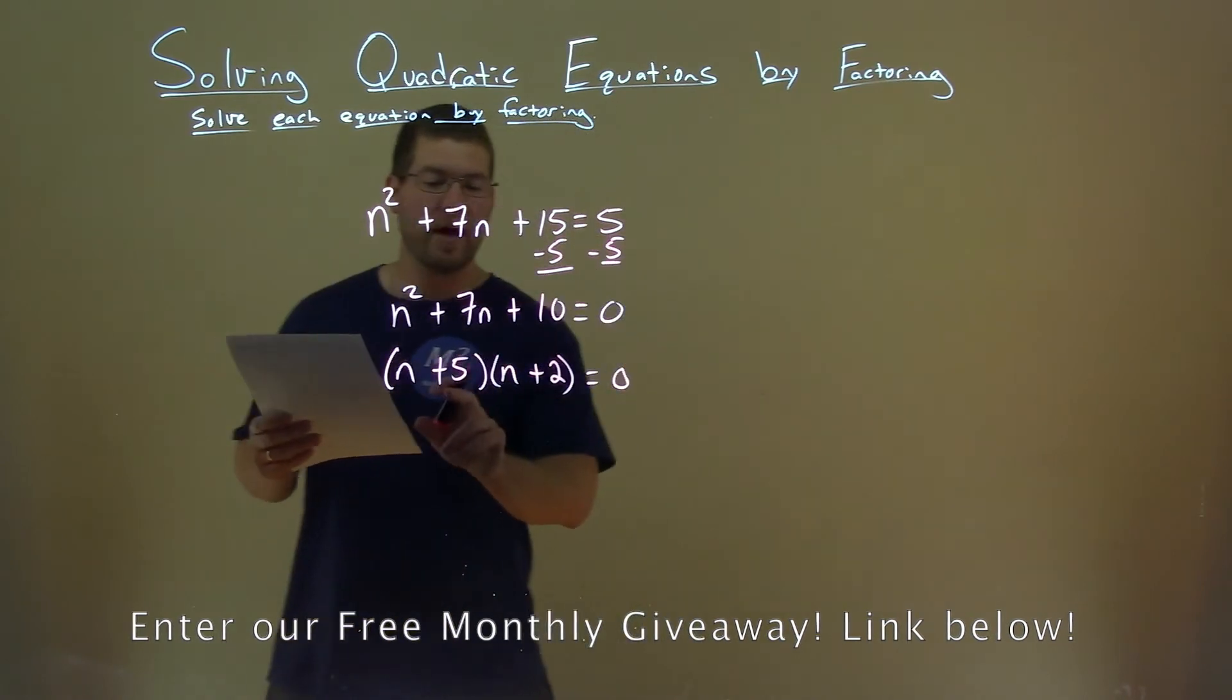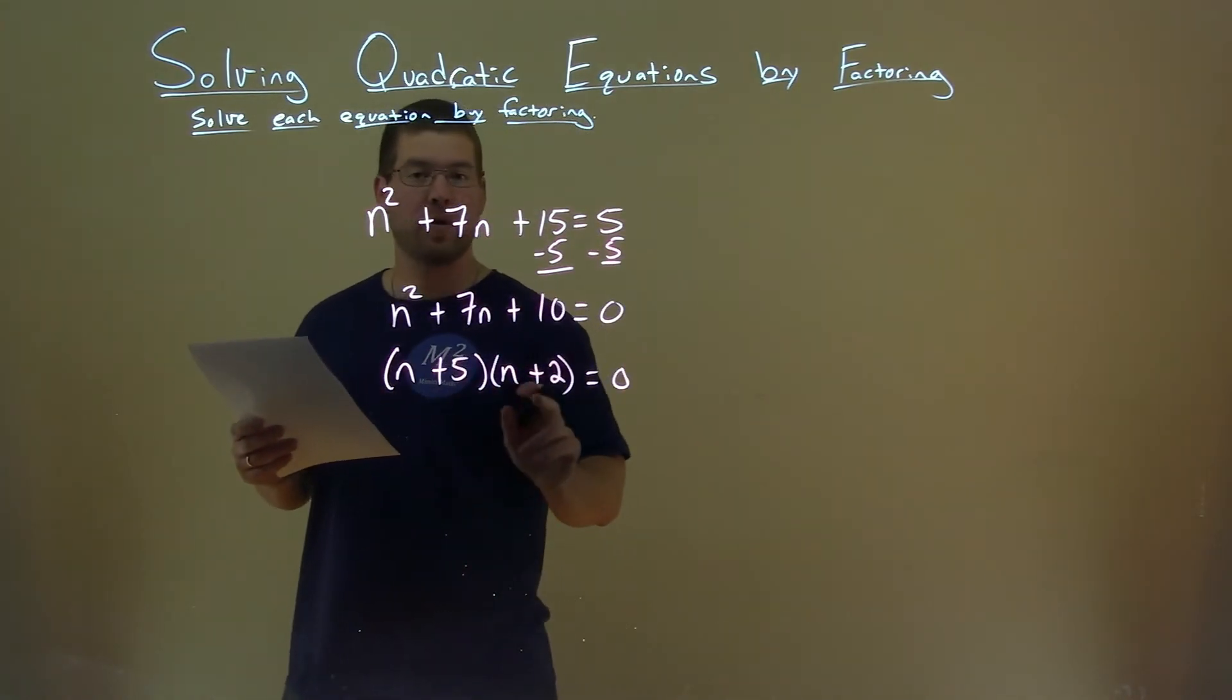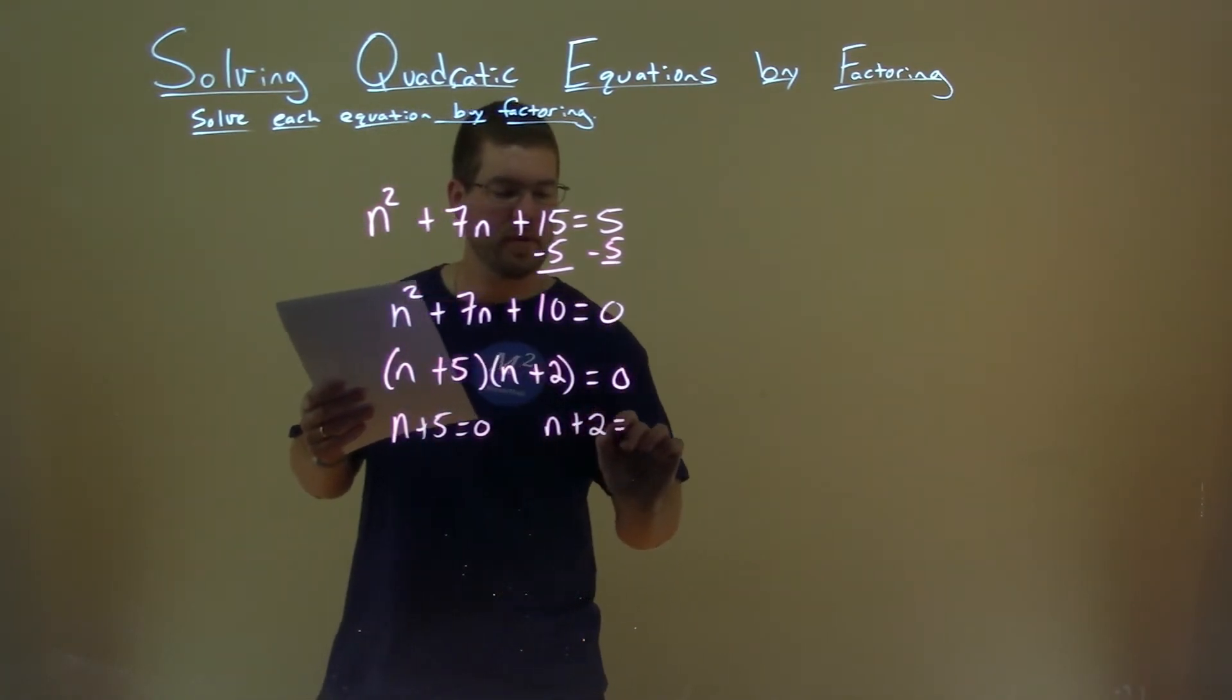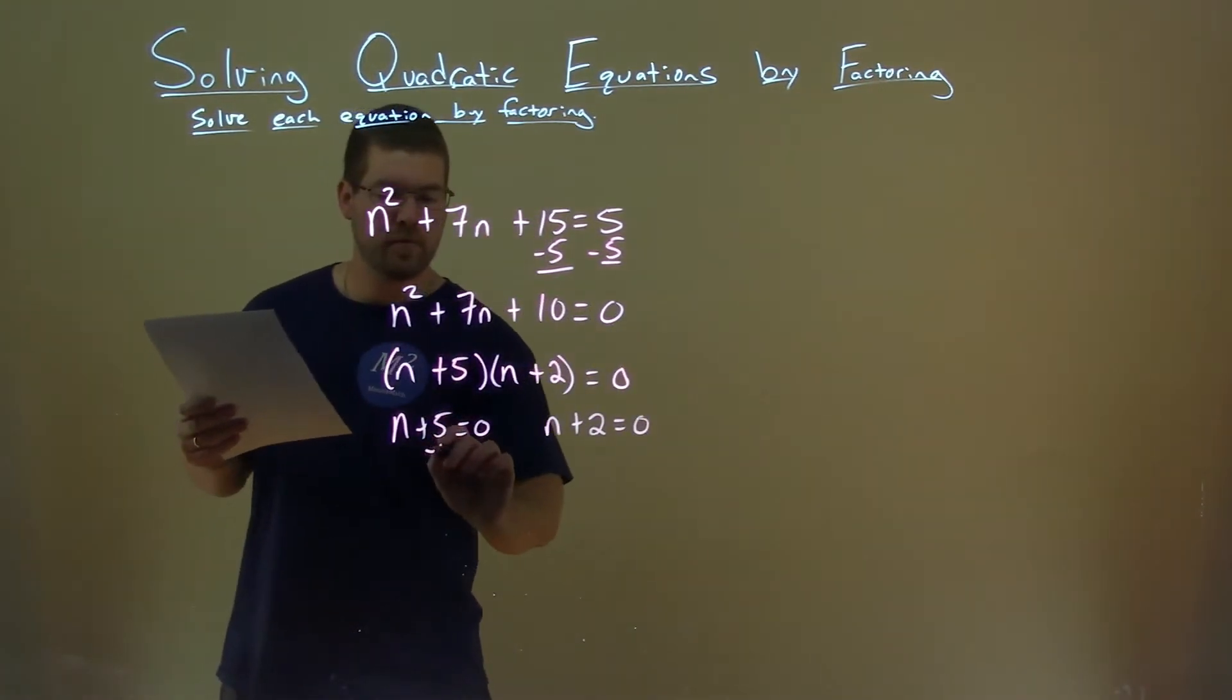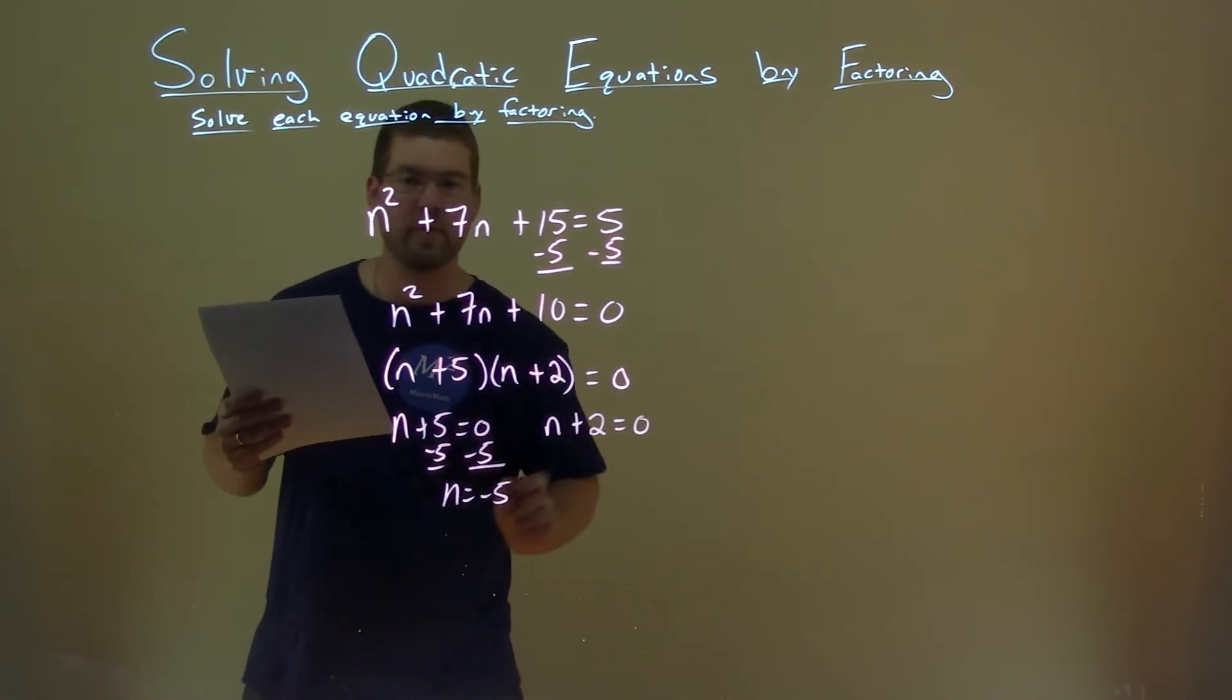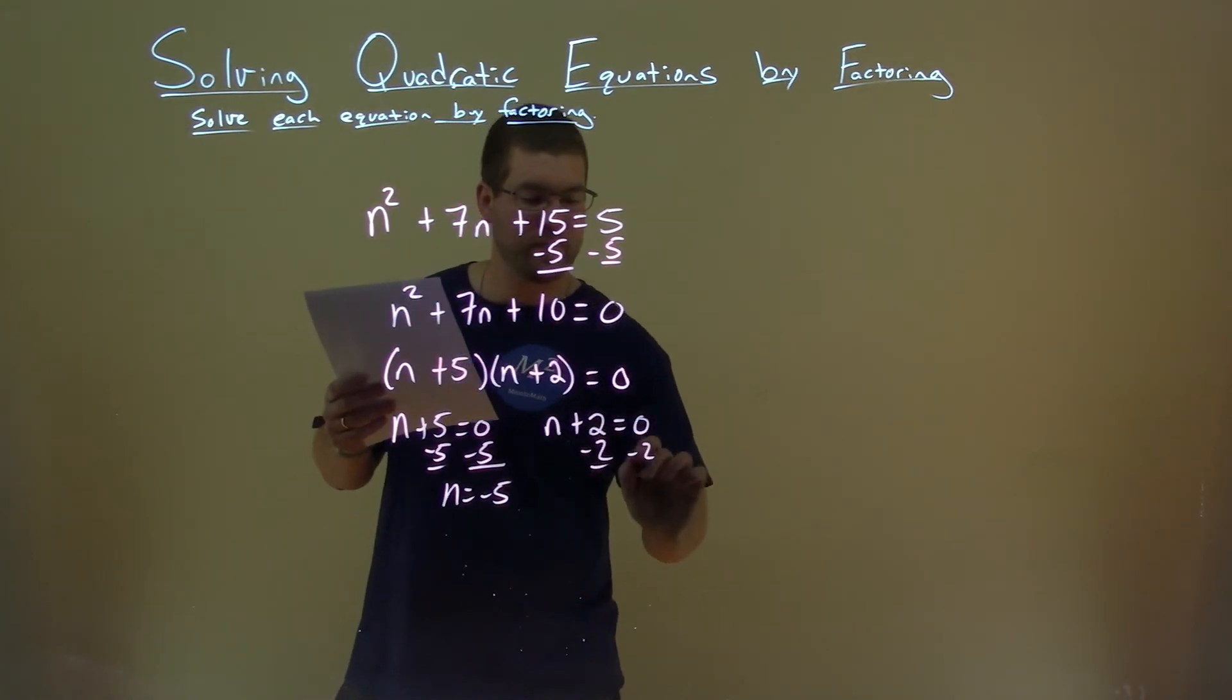Alright, so now we have this factored, we can set both parts equal to 0. n plus 5 equals 0, n plus 2 equals 0. We subtract 5 from both sides, and n equals negative 5. Subtract 2 from both sides, and n equals negative 2.